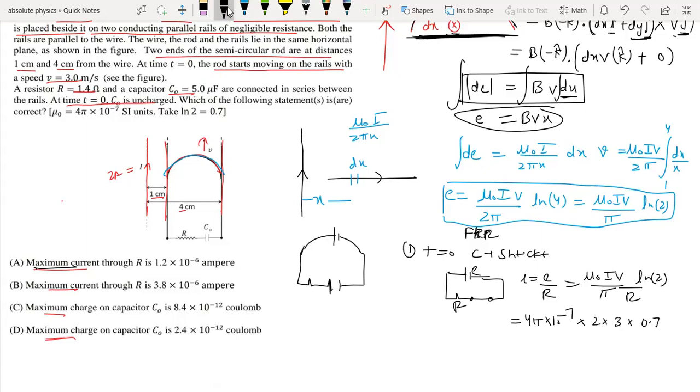Substituting v=3 m/s, ln(2)=0.7, I=5A, and R=1.4Ω, we get I_max = 1.2×10⁻⁶ A. So option A is correct.